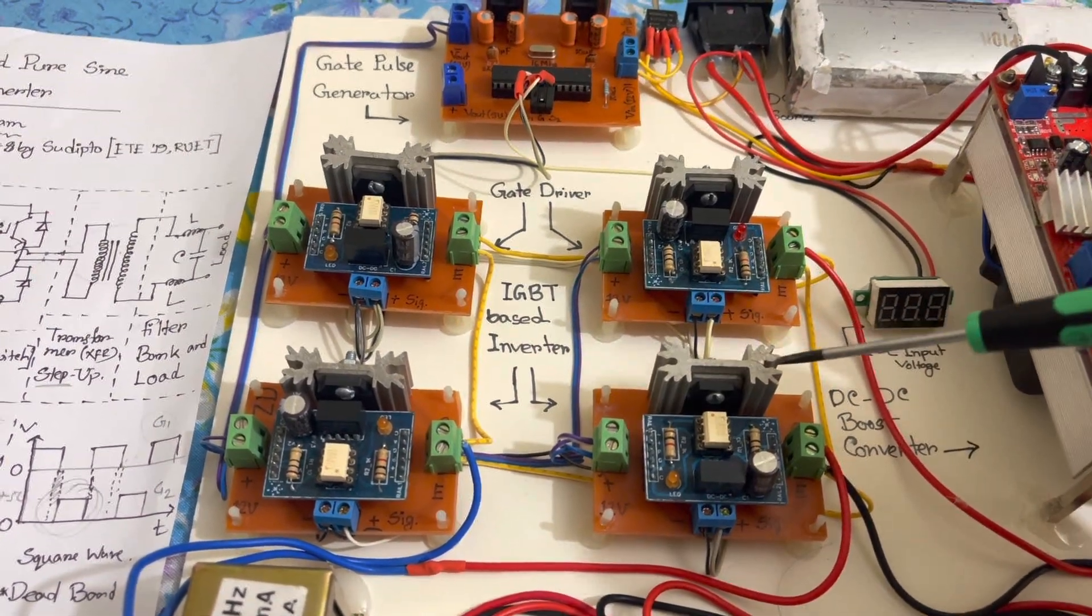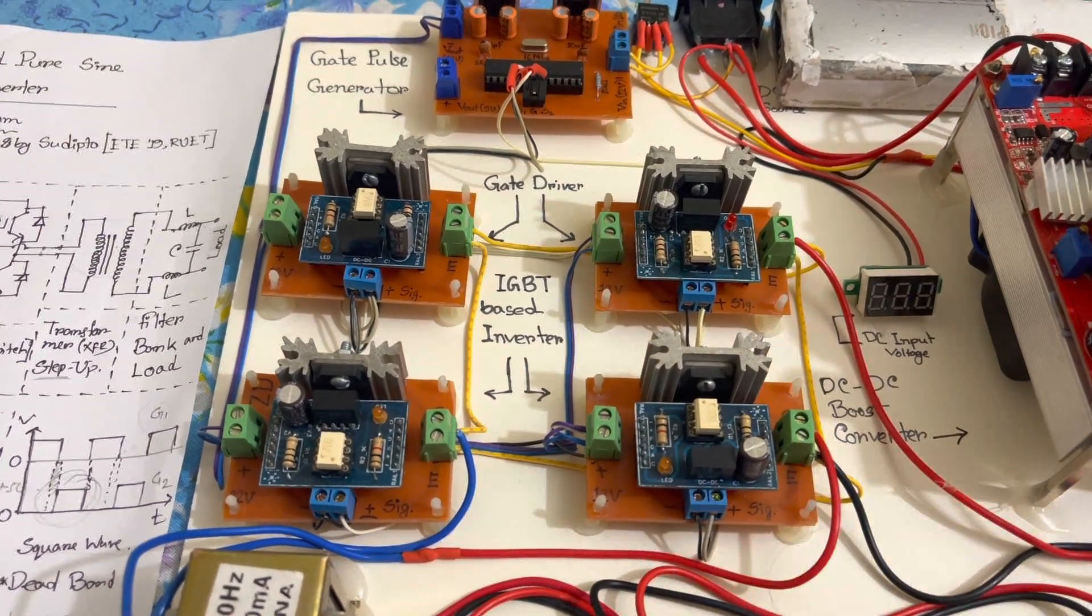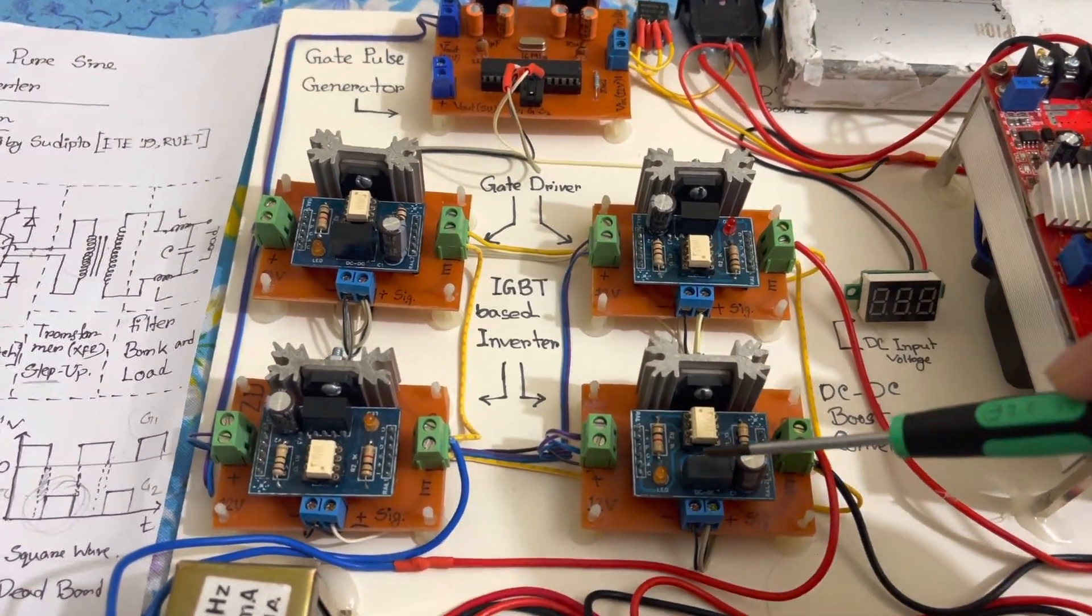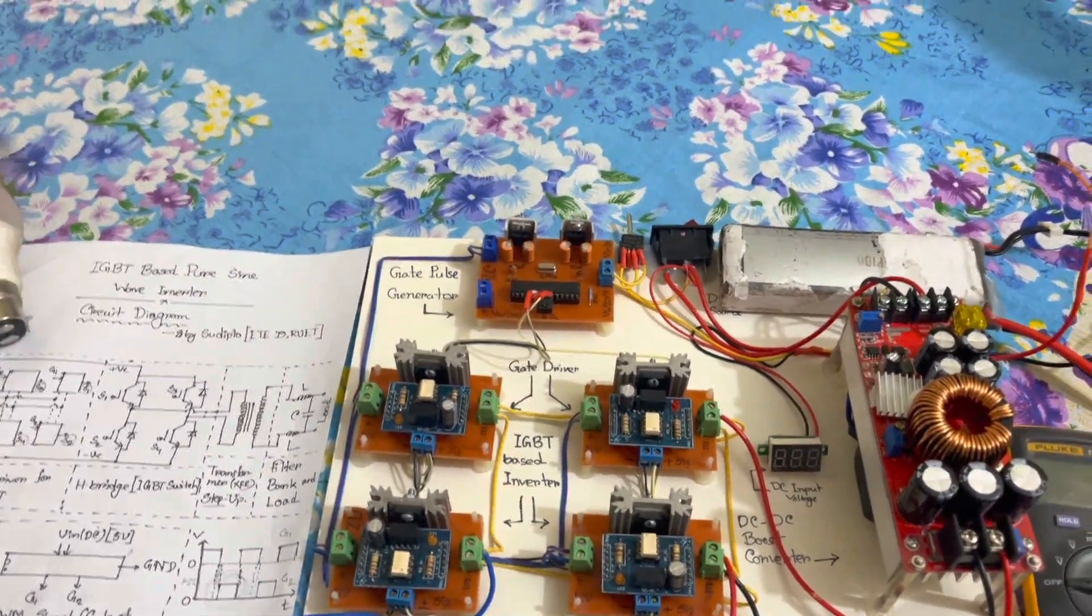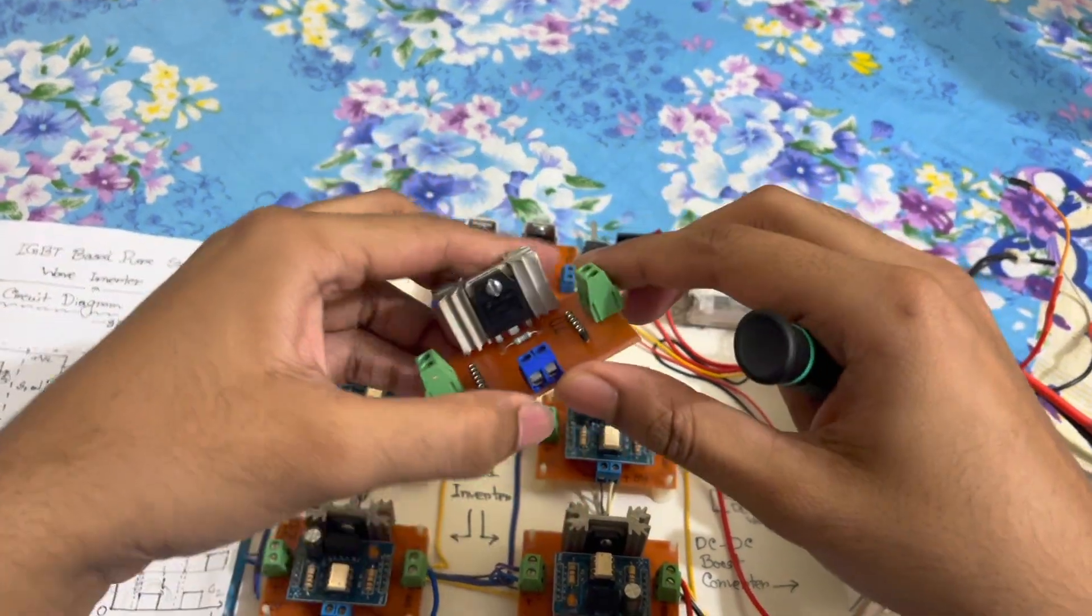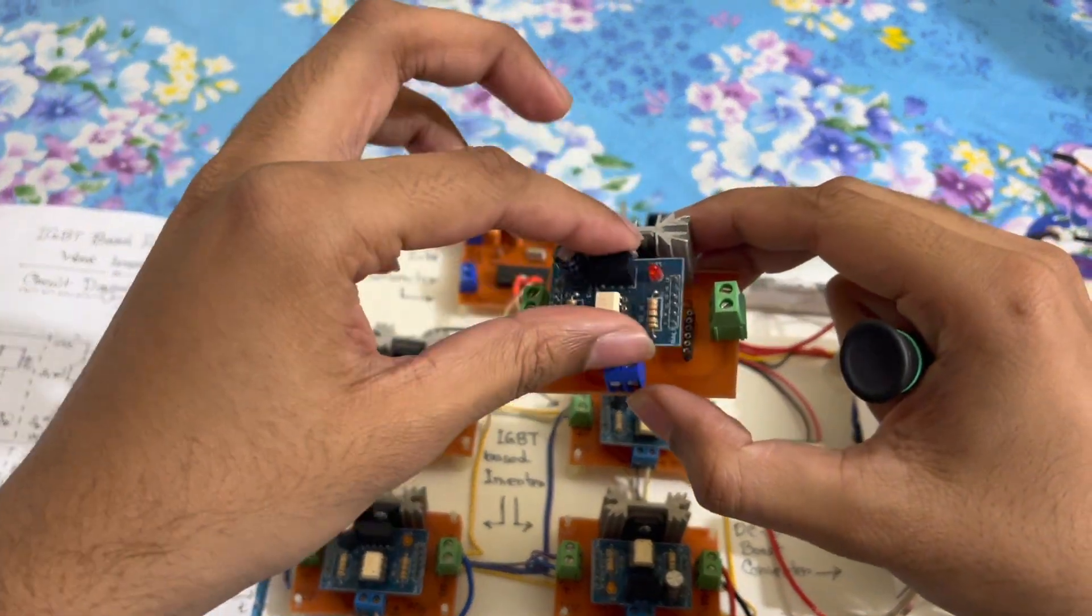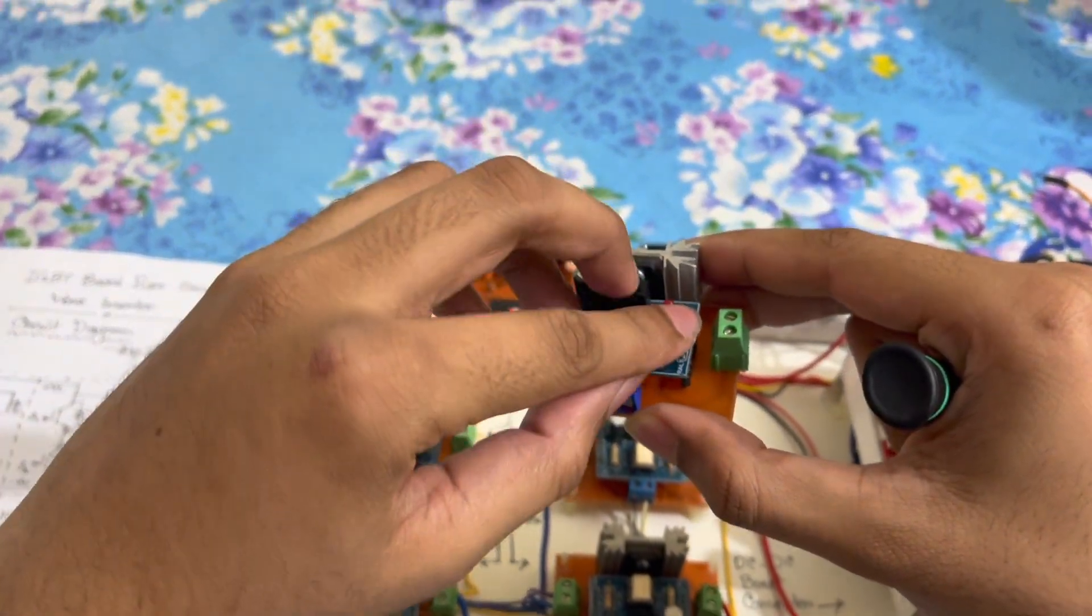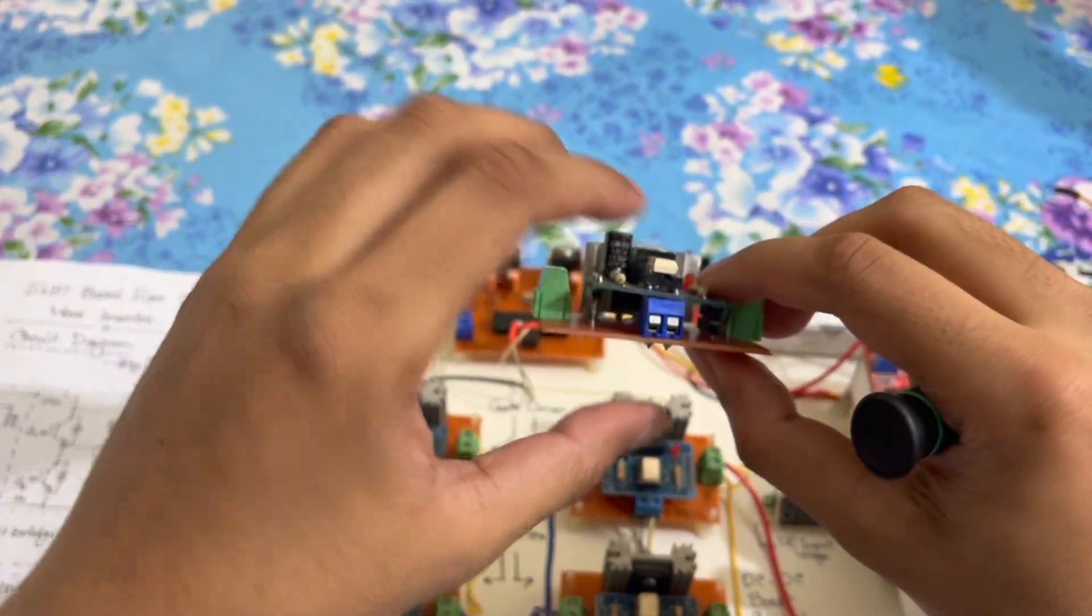These are the IGBTs and I have attached a corresponding heat sink with this for better power performance. These are the gate drivers. This is the main board of the IGBTs and this board consists of the IGBTs and this gate driver board as well.